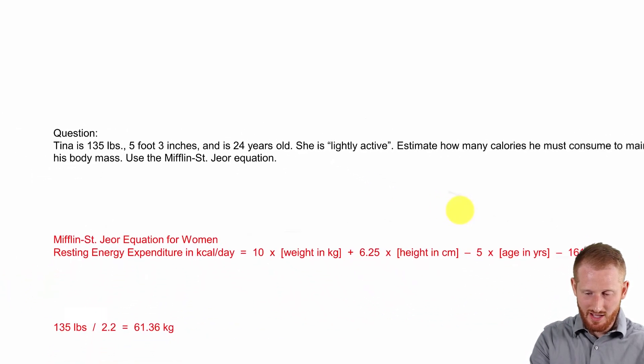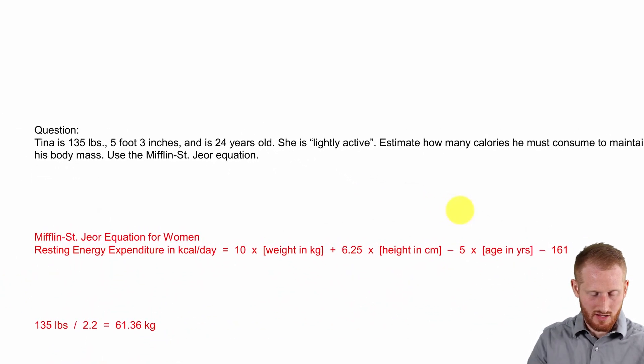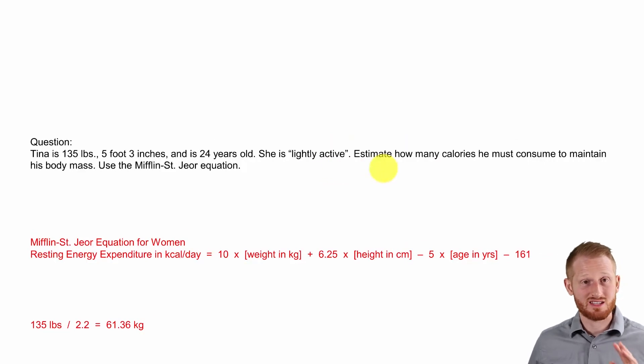So we have here Tina, who is 135 pounds. She is 5 foot 3 inches tall. She is also 24 years old and she reports being lightly active. So we're going to estimate her energy needs in kcal per day in order to maintain body mass using the Mifflin-St. Jory equation.